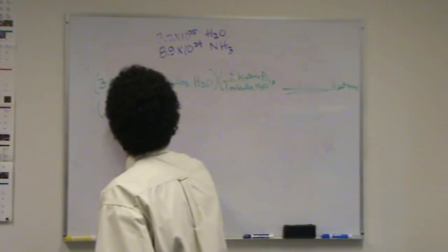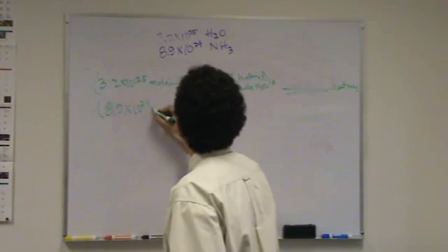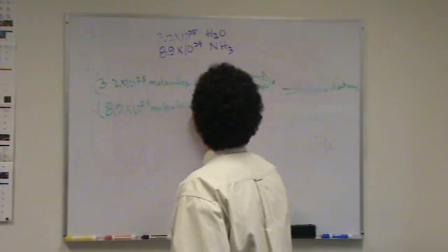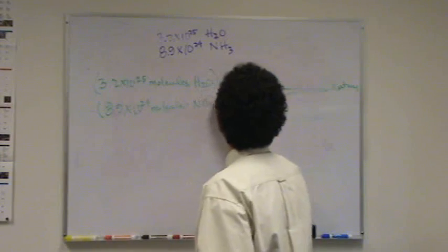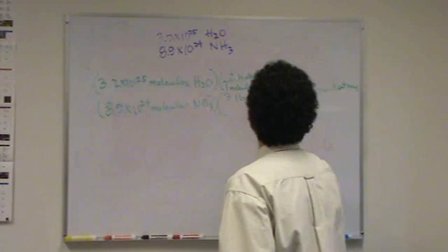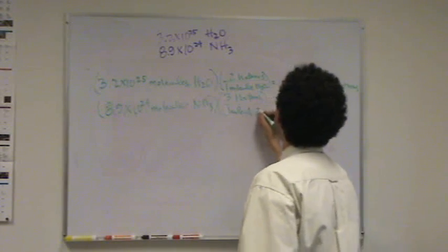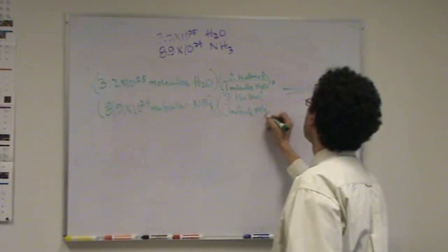8.9 times 10 to the 24th molecules of NH3 times 3 hydrogen atoms for every one molecule of NH3.